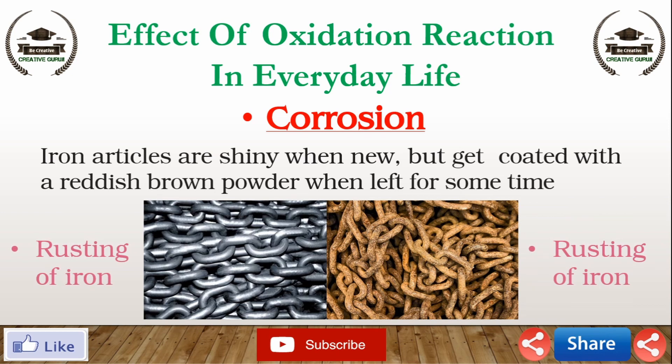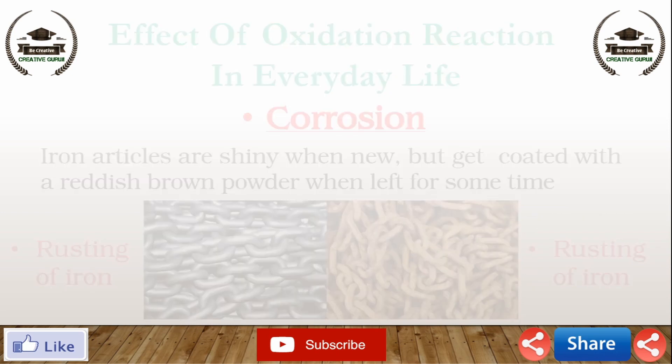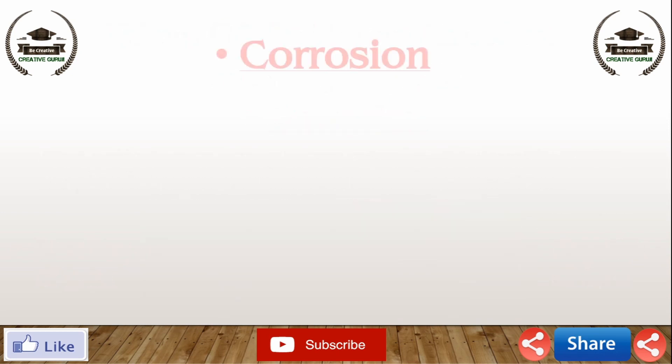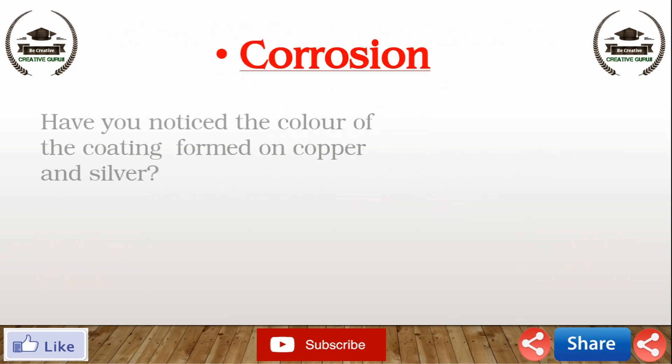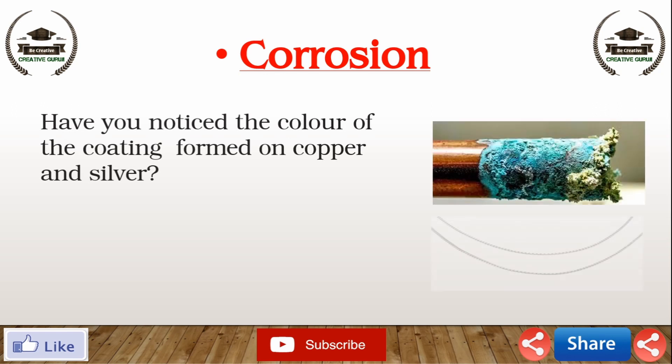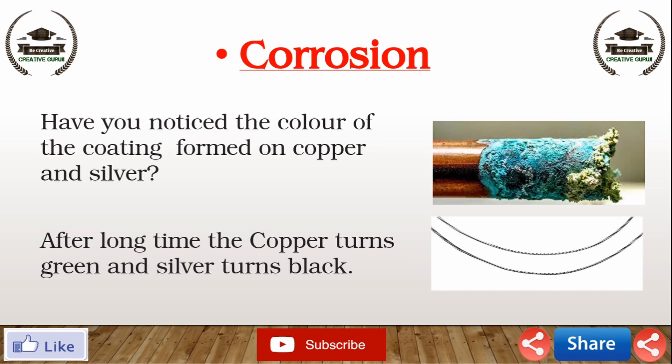Have you noticed the color of a coating formed on copper and silver, as shown in this picture? After a long time, the copper turns green and silver turns black.